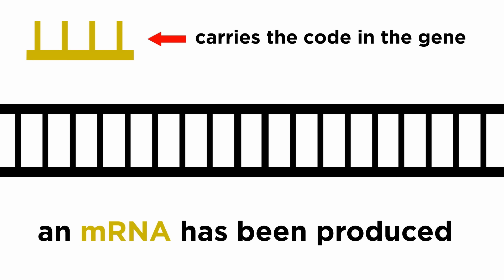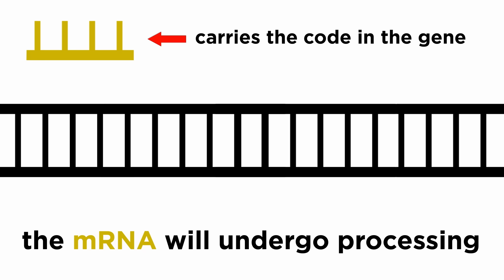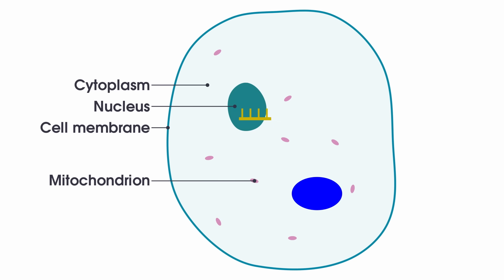This carries with it the information encoded in the gene, and after a few quick modifications during RNA processing, it will leave the nucleus, where all the genetic material or chromatin is, and move into the cytoplasm, where it will find a ribosome.